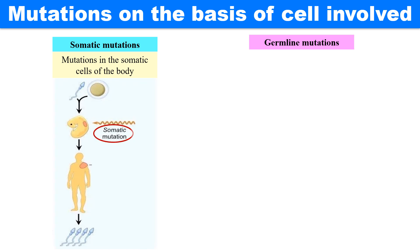This is a somatic mutation because the embryo has somatic cells, and this mutation will ultimately show its effect in the individual — like here in the form of a patch shown in the affected area. And since this mutation is somatic, none of the gametes will carry this mutation.